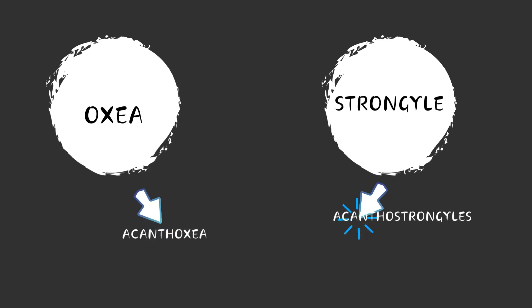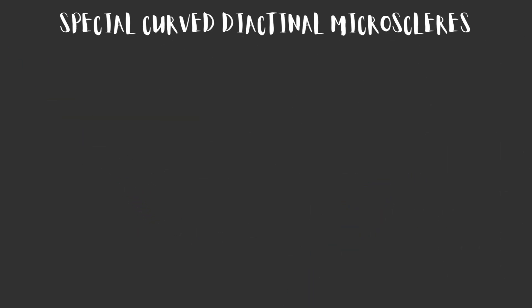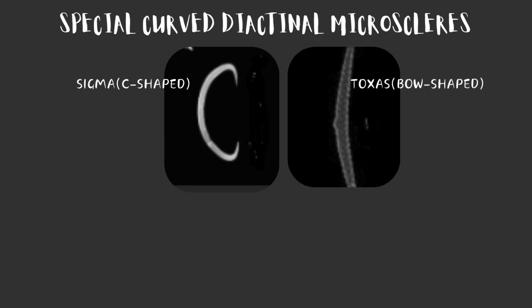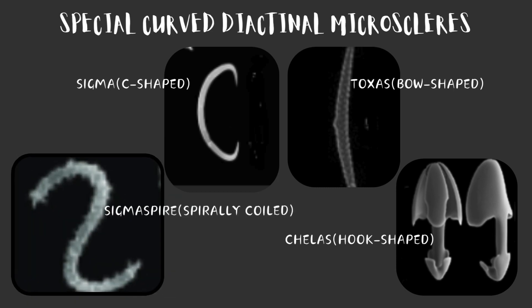Some sponges have special curved diactinal microscleres. These may be curved in one plane or spirally coiled, giving the following types: 1. Sigma — C-shaped spicules curved in one plane only. 2. Toxa — depressed in the center to form bow-shaped spicules. 3. Chelae — have recurved hooks or plates at the end, called isochelae when ends are similar or anisochelae when ends are dissimilar. 4. Sigmaspire — spirally coiled sigmas.